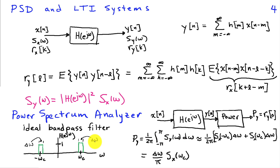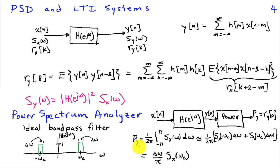Since delta omega is very small, the output power approximates to S_x at minus omega_c times delta omega plus S_x at plus omega_c times delta omega. For real-valued data, where the power spectrum is even, this simplifies to delta omega over pi times S_x of omega_c. So to estimate the power spectrum, compute the output power p_y, divide by delta omega, and multiply by pi. Sweeping the center frequency omega_c then traces out the power spectrum S_x of omega as a function of frequency.